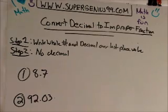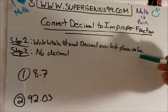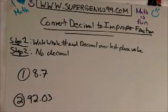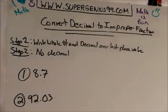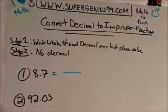Basically two steps. The first step is you write the whole number and the decimal over the last place value, and then you're not going to have any decimal. You understand we're turning this to an improper fraction, which means it's going to be a single fraction with no whole part to it.